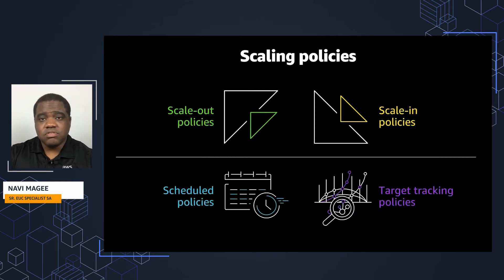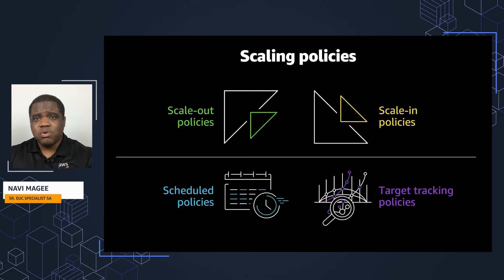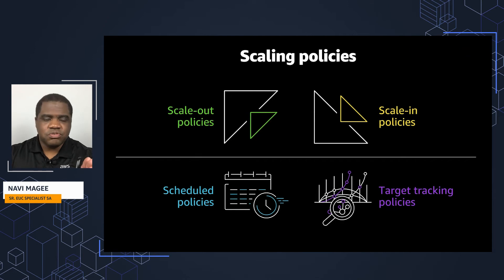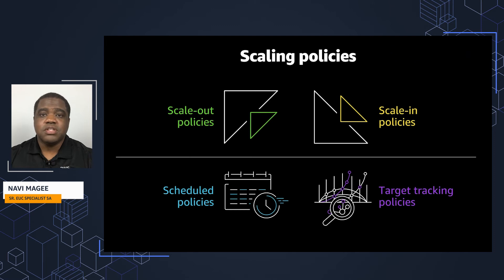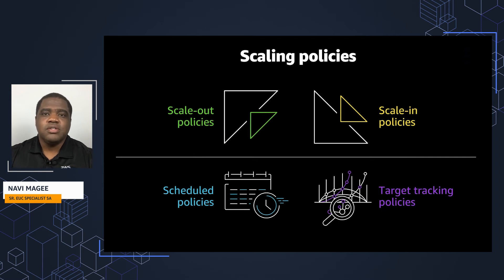Another type of policy is schedule policies. With schedule policies, you're able to change the capacity of your fleet based on a schedule, and this works well if you have a predictable workload — such as shift workers or projects used from a set start and end time. For example, if you know users come on at 7 a.m. and you expect 50 users early in the morning, you can set a start time to ramp the fleet up to 50. And if users finish for the day at 5 p.m., you can set it to reduce the count from the maximum of 100 back down to 50.